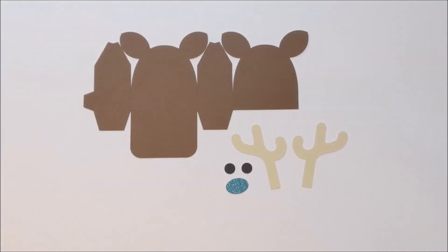You're going to start by cutting out all of your pieces on your cutting machine. There's the box, antlers, eyes, and nose.